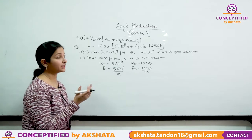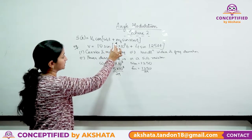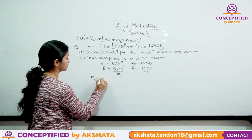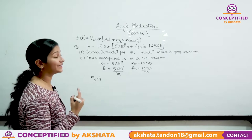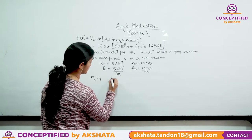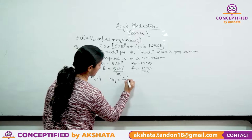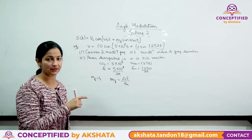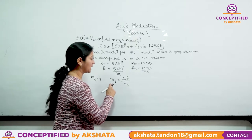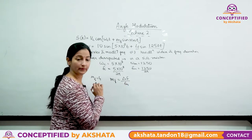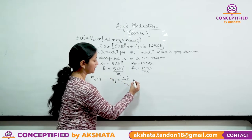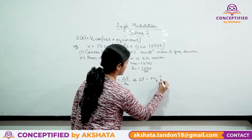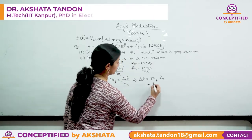Second, for modulation index, comparing the equation gives mf = 4. For frequency deviation, we know mf = Δf / fm, so Δf = mf × fm = 4 × (1250 / 2π). This gives us delta f.